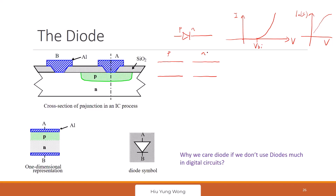The top line is the conduction band, and the bottom line is the valence band. Now, where is the Fermi level for the P-type — closer to the conduction band or valence band? Valence band, right — meaning I have a lot of holes. For the N-type, it is closer to the conduction band, meaning lots of electrons. When we bring them together, the Fermi level has to align — at equilibrium we must have a constant Fermi level.